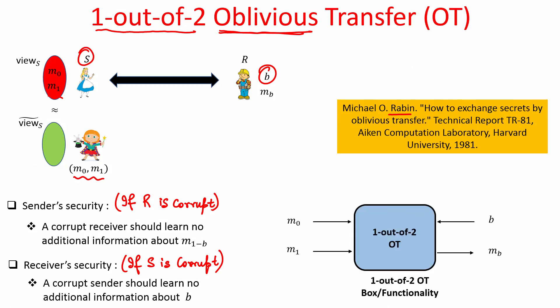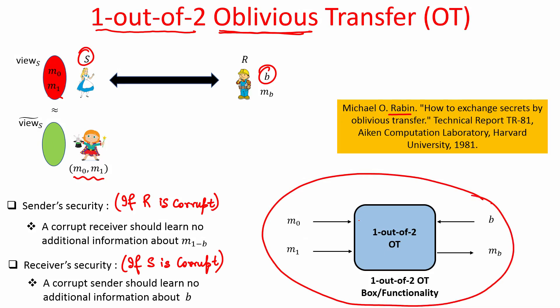We will see the design of OT protocols later since OT is a very fundamental primitive in cryptography. For now, whenever I assume we have an oblivious transfer protocol, I will use a specific notation: the OT box where the sender feeds its inputs M0, M1 and the receiver feeds its selection bit and obtains the message it is interested in. It is called 1-out-of-2 OT because the receiver gets one out of the two messages.